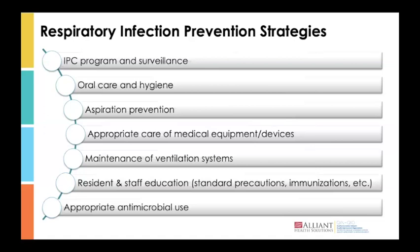Aspiration prevention is also key. Aspiration occurs when food, liquids, saliva, or vomit is breathed into the airway or lungs, causing irritation and increasing the risk of infection. Individuals at higher risk include stroke patients, those with dementia, or those with other neuromuscular conditions. Prevent aspiration by completing nutritional and functional status assessments, providing assistance with meals for those with dysphagia, ensuring residents sit upright, avoiding sedative medications or medications that dry saliva before eating, and managing gastric reflux or GERD.